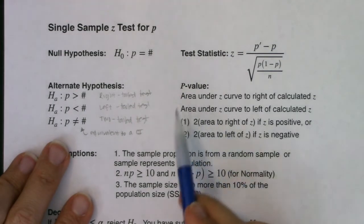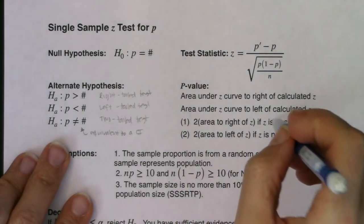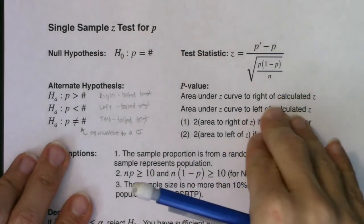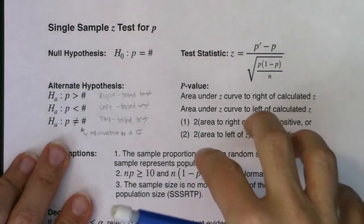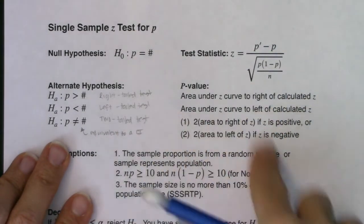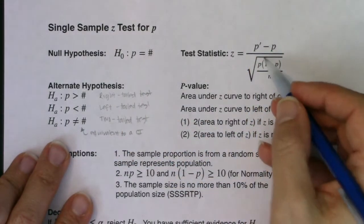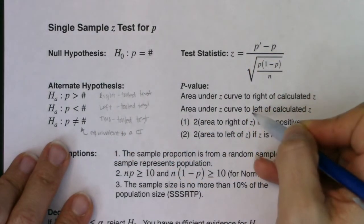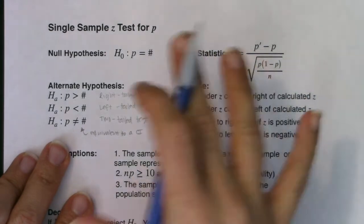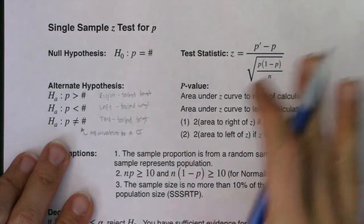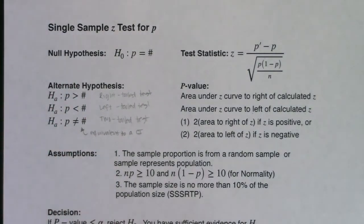I know this is really confusing — I will circle back to this. We're really going to work on the mechanics initially, and then come back to the why. I'm going to show you how to get the test statistic and the p-value, and we will come back to the why. Welcome to hypothesis testing — it's vague initially, and then we'll stare it down.